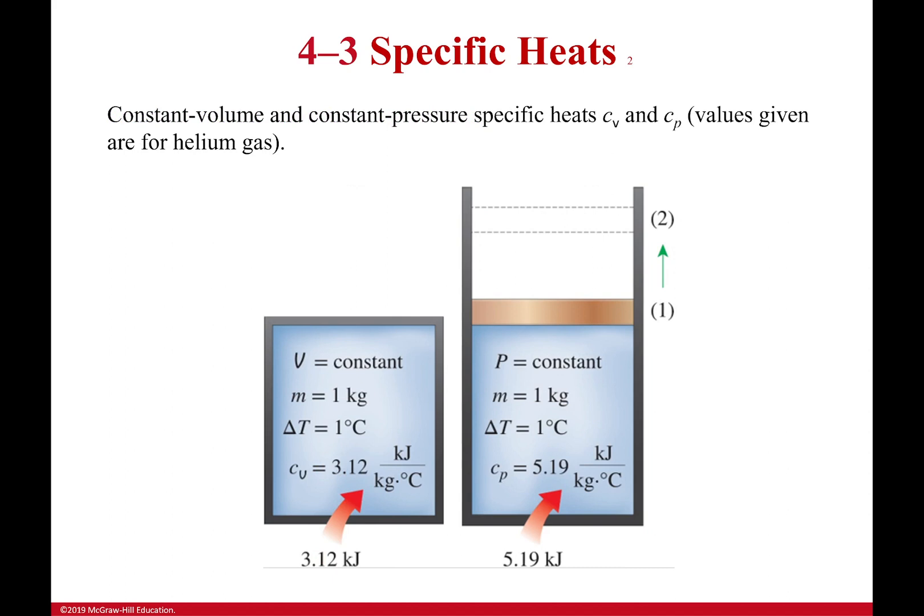Now, I said it was constant volume and constant pressure. So one was Cv, the other one is Cp. So I've got these two cases. One, you can see it's a closed container, it can't move, can't change, so its volume has remained constant, its pressure can change. In this case, the volume can change, but the pressure is constant because I have that same weight on top of it the entire time.